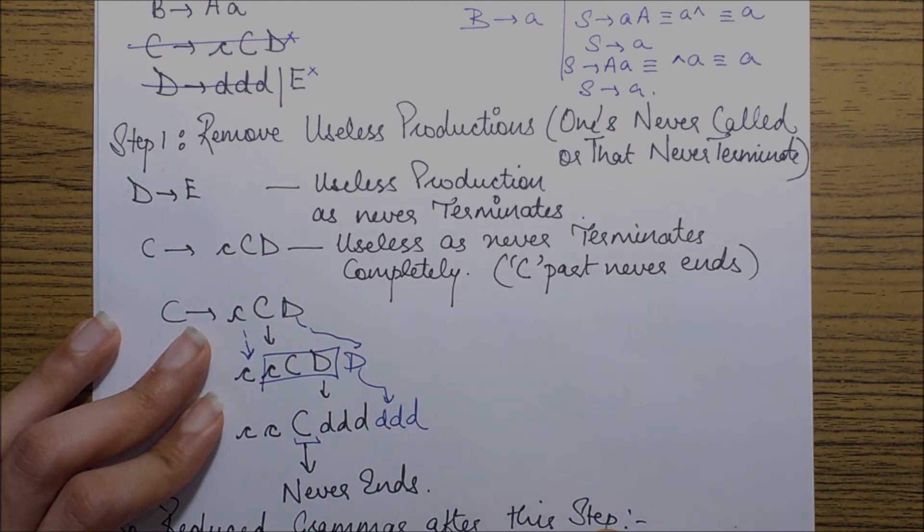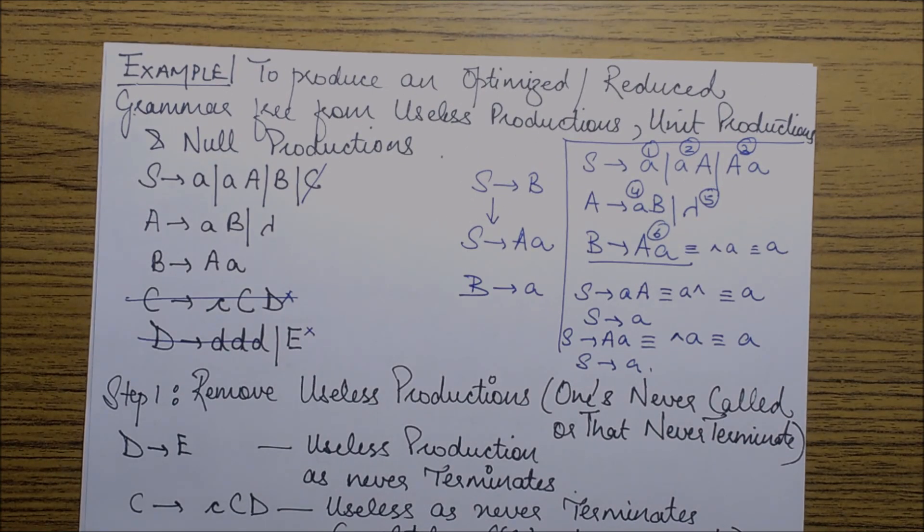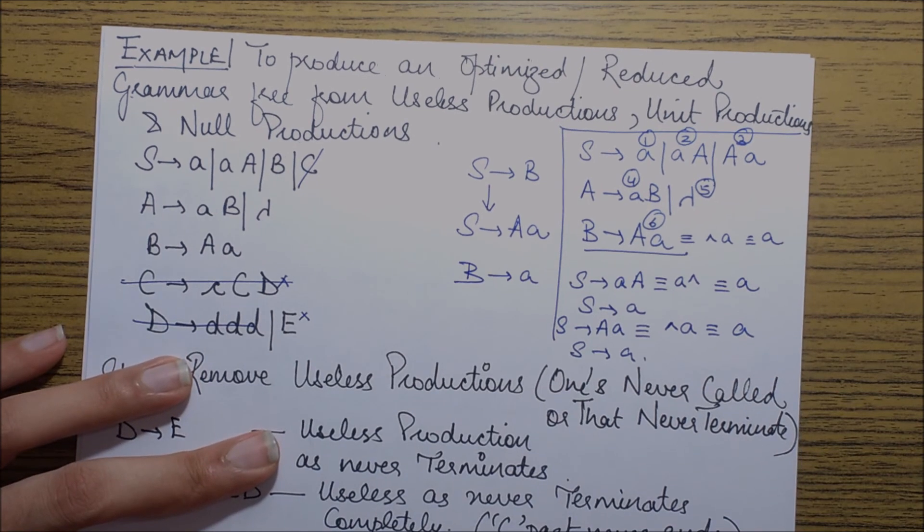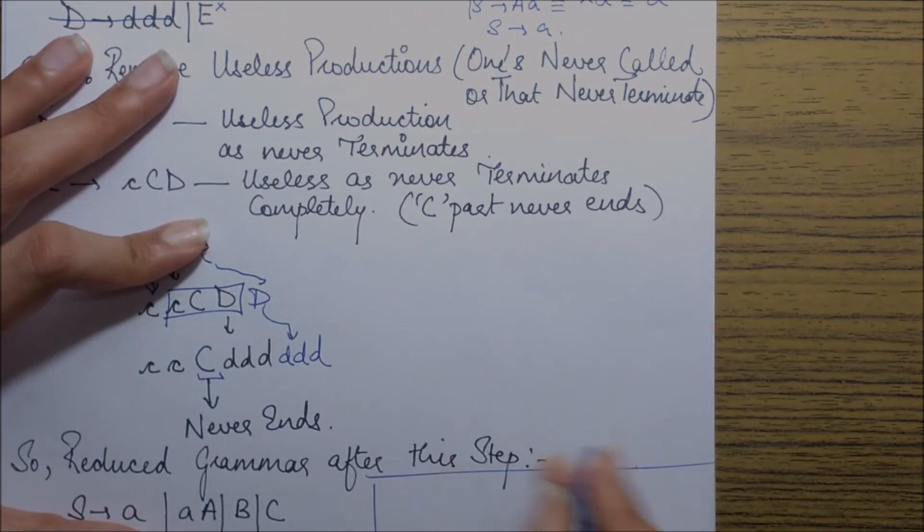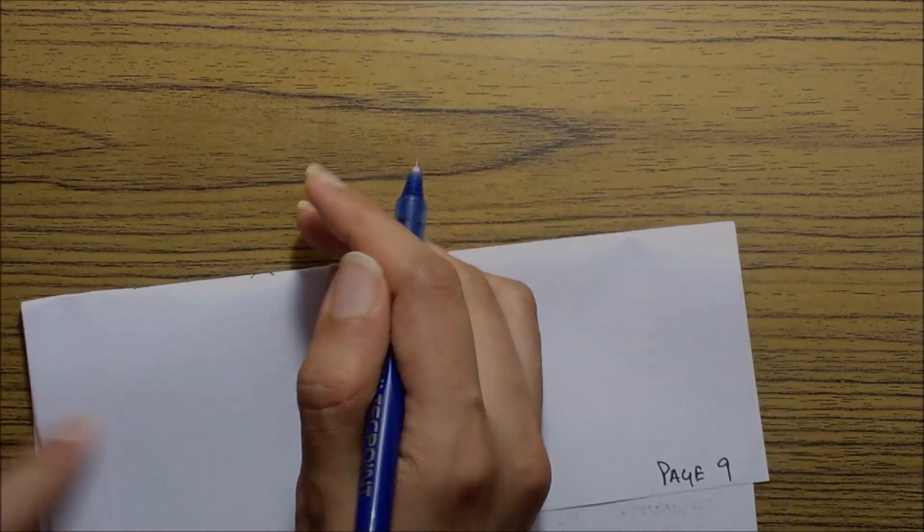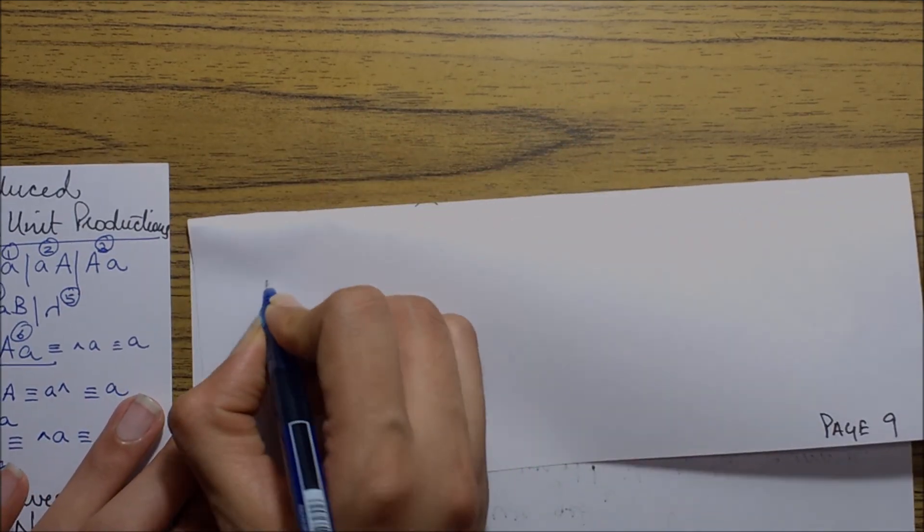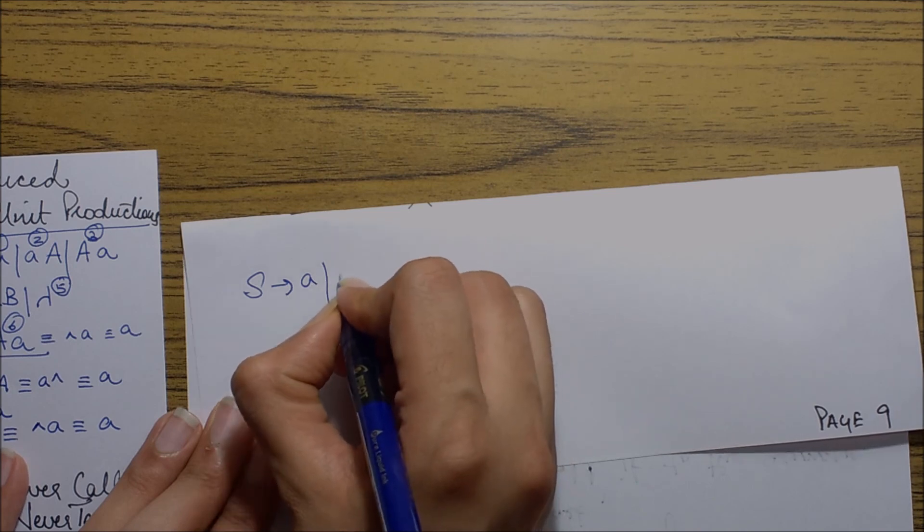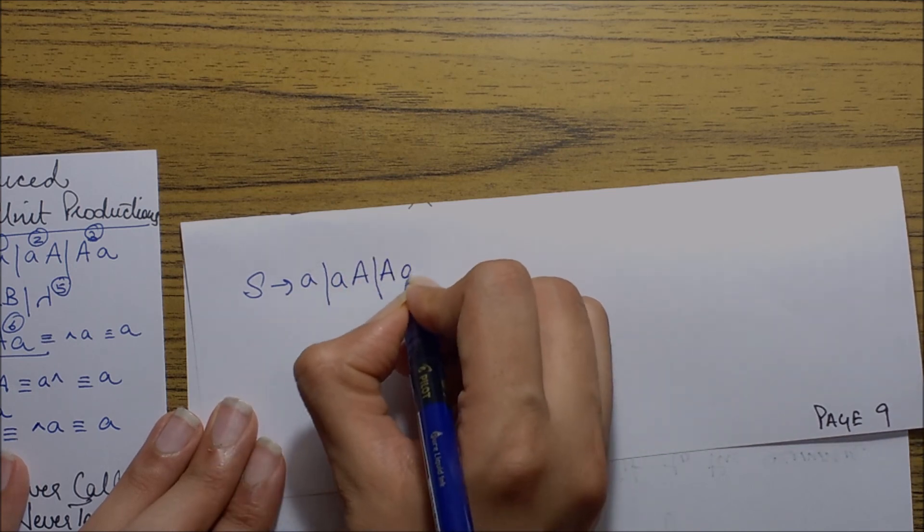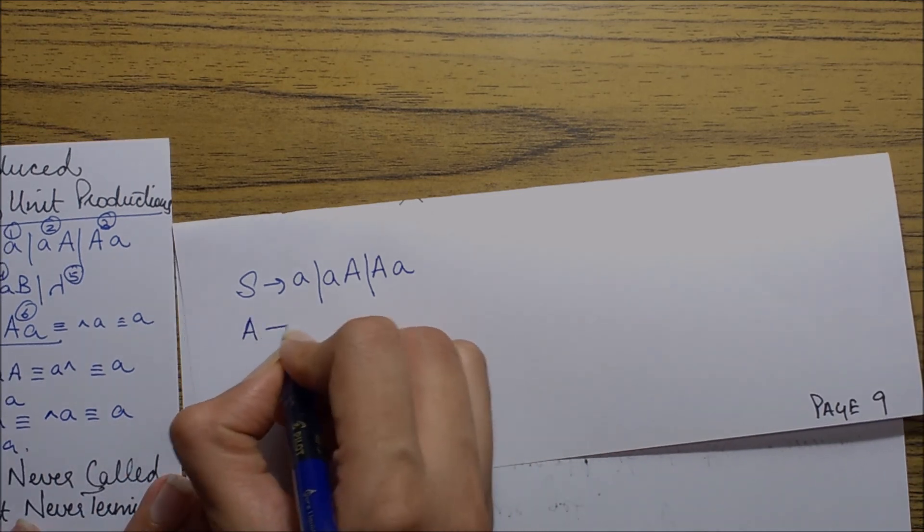If I could write down, it is S goes to small a, S goes to small a capital A, S goes to capital A small a, A goes to AB.